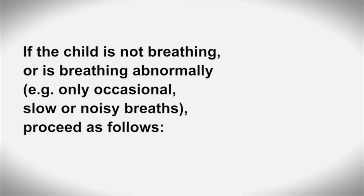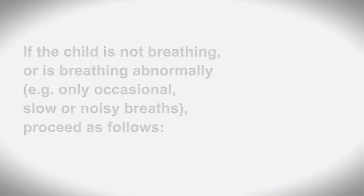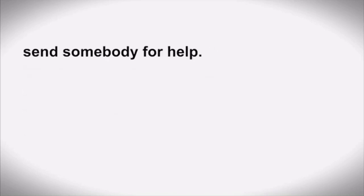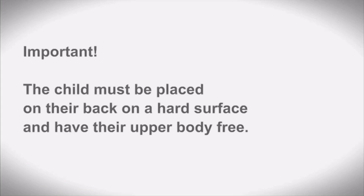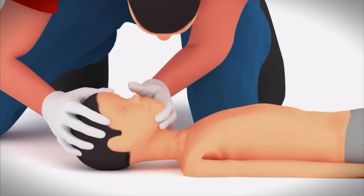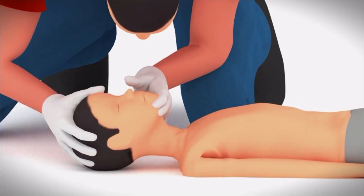If the child is not breathing, or is breathing abnormally — for example, only occasional, slow, or noisy breathing — proceed as follows: send somebody for help. The child must be placed on their back on a hard surface with the upper body free. Keep the airway open by tilting the head back and lifting the chin.